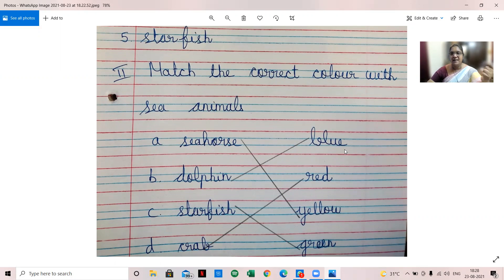First, seahorse - you all know seahorse is yellow, so you have to match by drawing a line. Dolphin, you have to strike blue. Starfish is green color. Crab is red color. So you have to match.